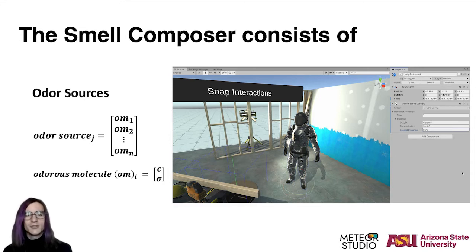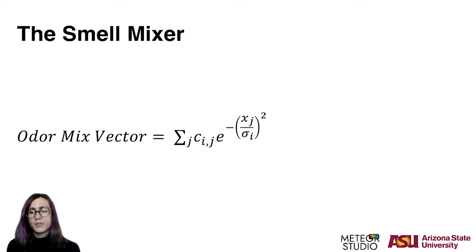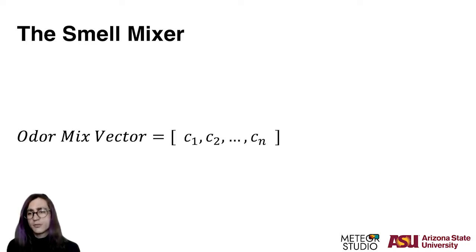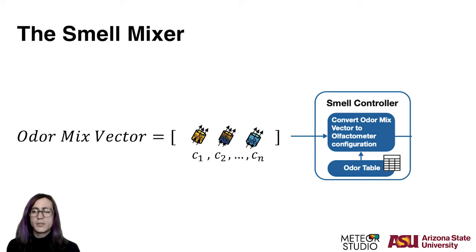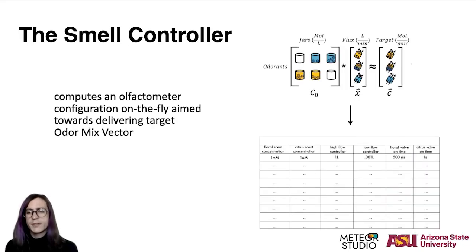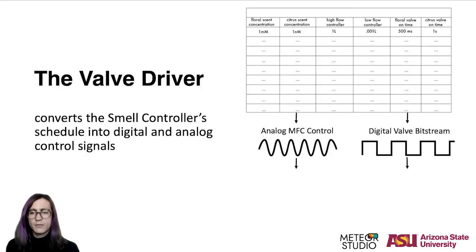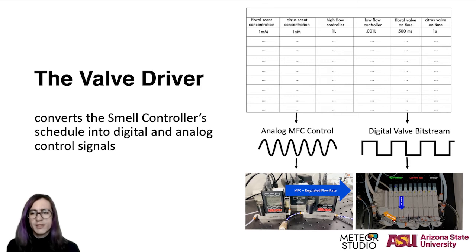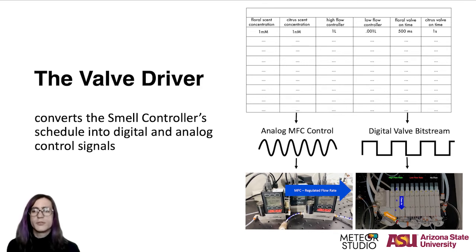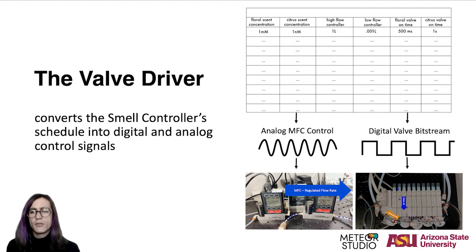Now let's switch over to the runtime stages. Using an atmospheric diffusion equation, the smell mixer component calculates an odor mix vector — a spatially dependent vector specifying the concentration profiles of all present molecular odorants relative to a user's position. The odor mix vector is then transmitted to the smell controller, which calculates the amount of flux needed to achieve the targeted concentrations and translates that into a schedule of valve duty cycles and MFC flow rates. The valve driver then issues multiplexed digital and analog signals that correspond to the scheduled valve states and MFC flow rates from the smell controller.